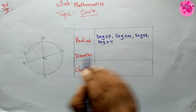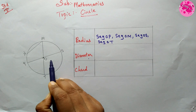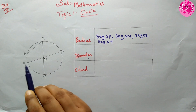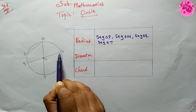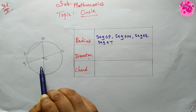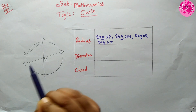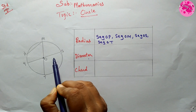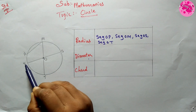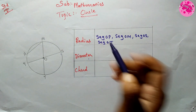Now let's find the diameters. The diameter is the line passing through the center of the circle. So in the diagram, the lines which pass through center O are segment PS and segment MT.